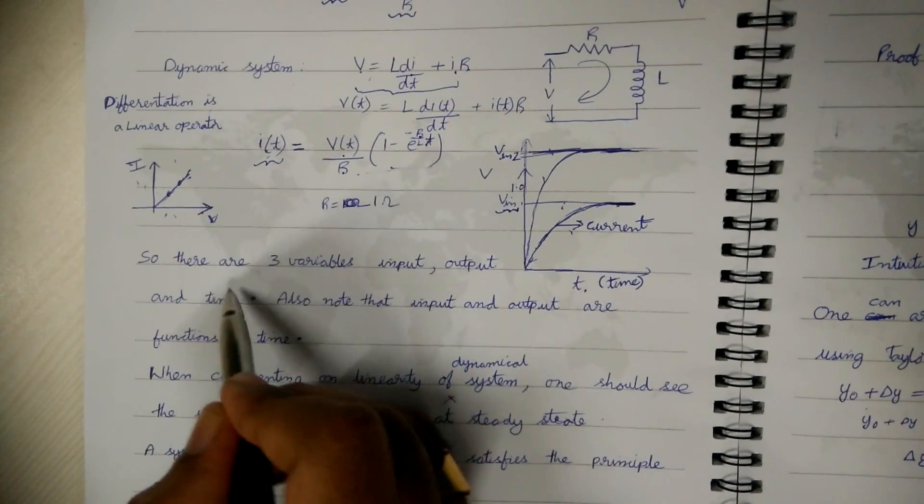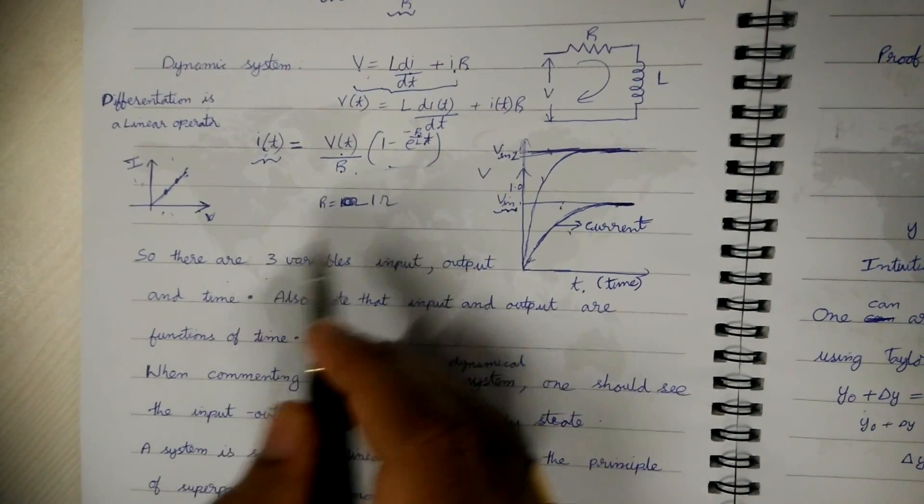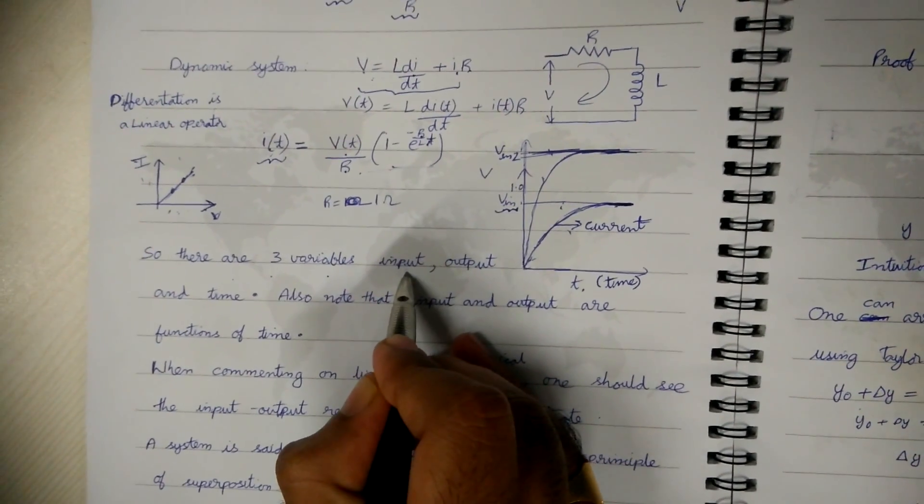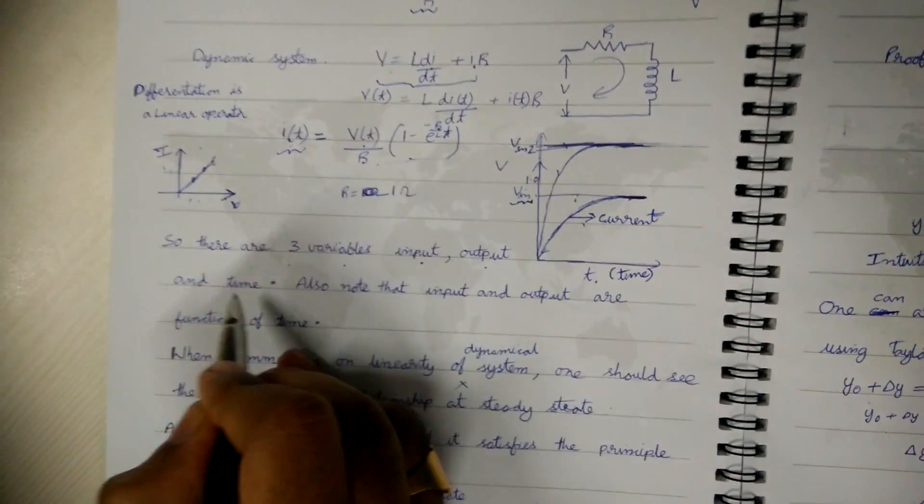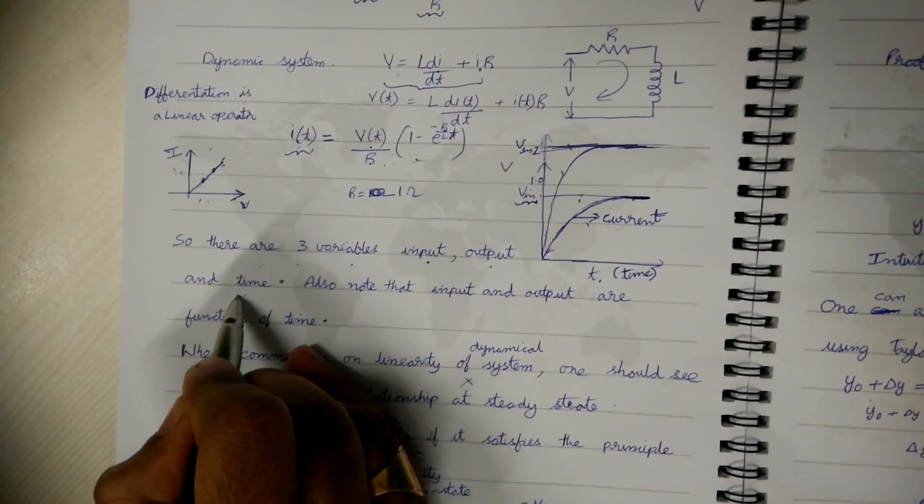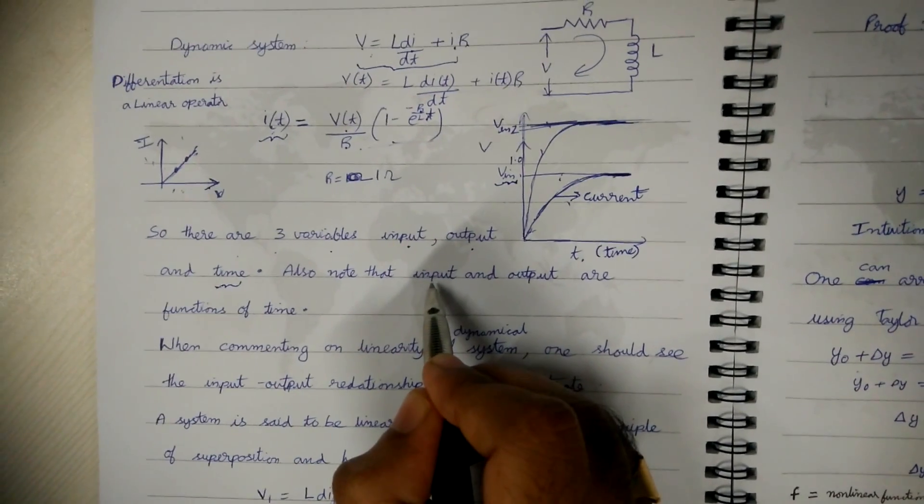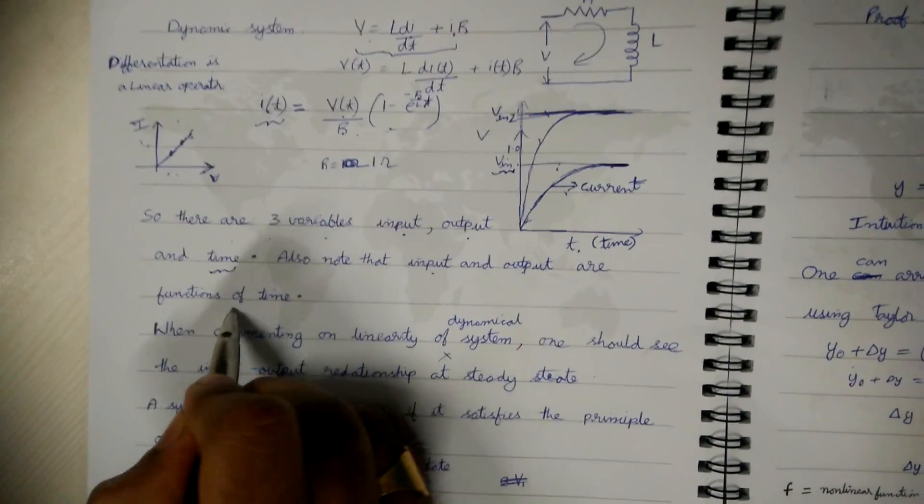So what is more important to note here is there are three variables: one is input variable, one is output variable, and the third one is for dynamical systems time, and the input and output variables are functions of time.